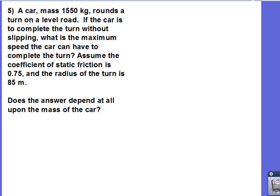Now, these values here are pretty typical for highway roads, so for maybe an on-ramp or an off-ramp, about an 85 meter radius, and 0.75 is a pretty good coefficient of static friction for rubber on dry concrete. Let's go ahead and start with a little picture here off to the side. So let's go ahead and make a curve here that the car is going to be completing for this turn.